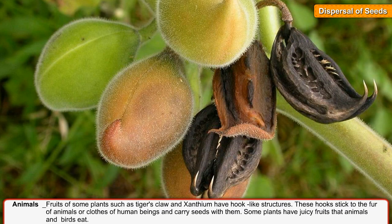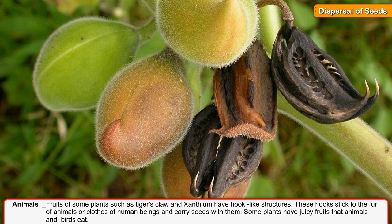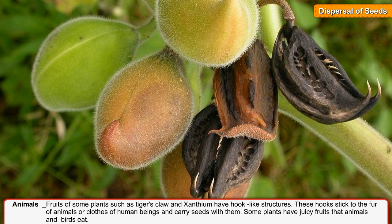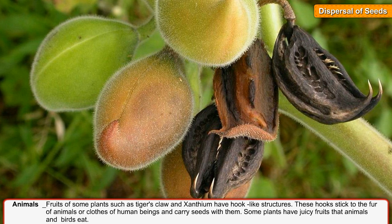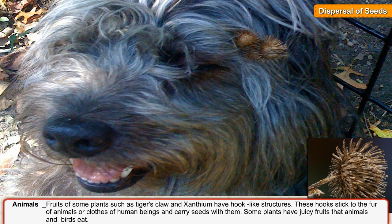Fruits of some plants such as tiger's claw and xanthium have hook-like structures. These hooks stick to the fur of animals or clothes of human beings and carry seeds with them.